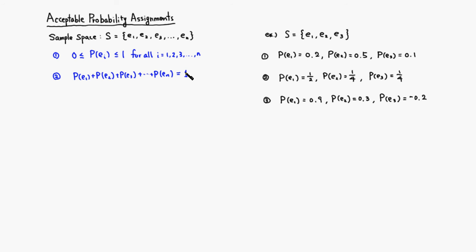Let's look at a small example. You have a sample space with three outcomes: e1, e2, and e3. Let's look at the following probability assignments. Are they acceptable? So (a) probability of e1 is 0.2, probability of e2 is 0.5, probability of e3 is 0.1. It looks like it satisfied the first condition. How about the second condition? 0.2 plus 0.5 plus 0.1 is only 0.8, which does not add up to 1. Therefore this first example is not acceptable.